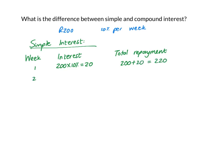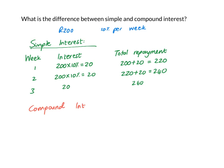In the second week, I again work out 10% of 200 rand and get 20 rand, so my total repayment will now be 240 rand. In the third week, my interest is again 20 rand and my total repayment is 260 rand, and so on. With simple interest, I keep adding 20 rand a week — the same amount each time.